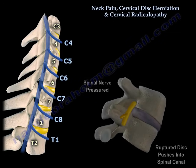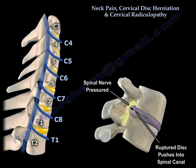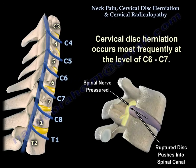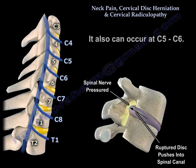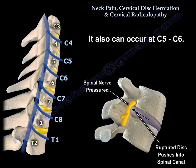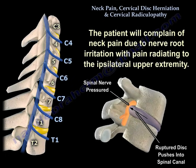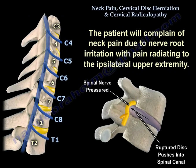Neck Pain, Cervical Disc Herniation, and Cervical Radiculopathy. Cervical disc herniation occurs most frequently at C6-C7, and it can also occur at C5-C6. The patient will complain of neck pain due to nerve root irritation, with the pain radiating to the ipsilateral upper extremity.